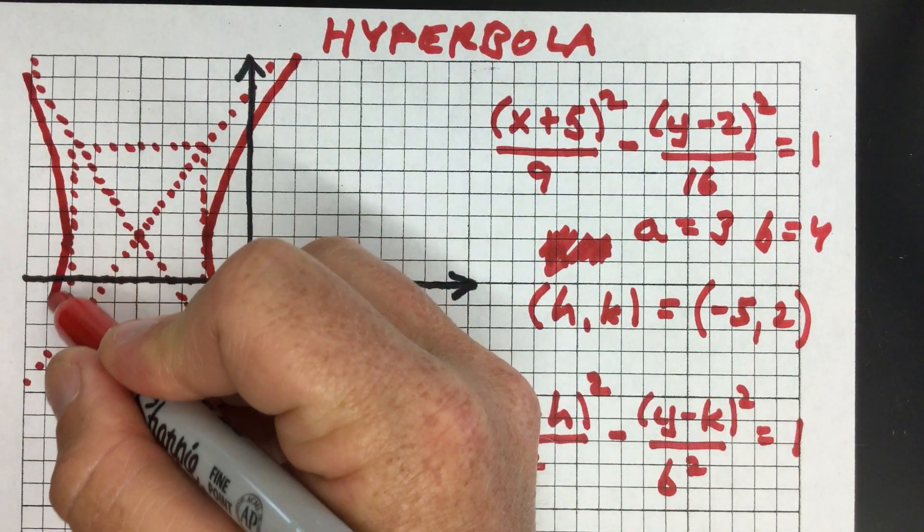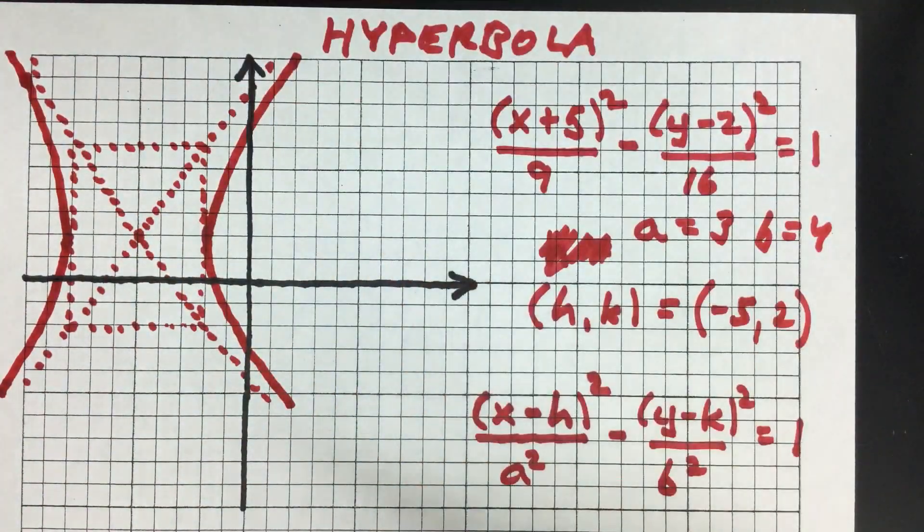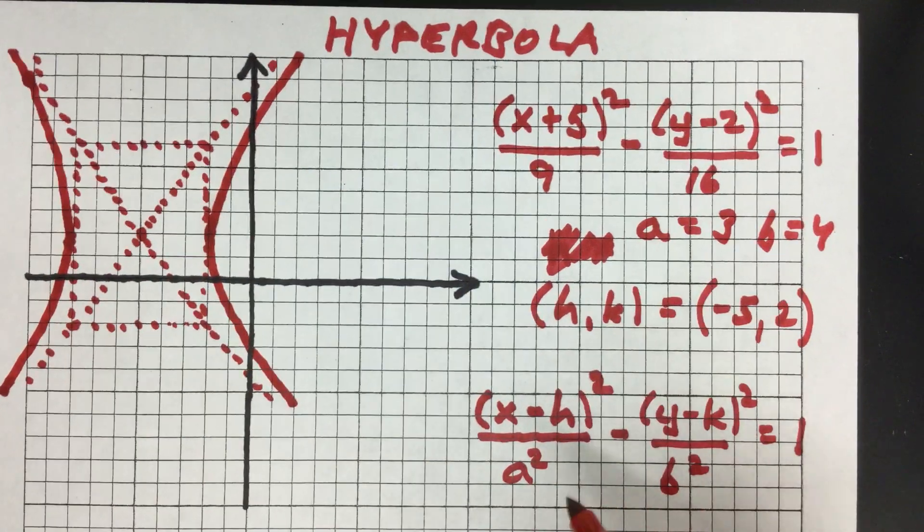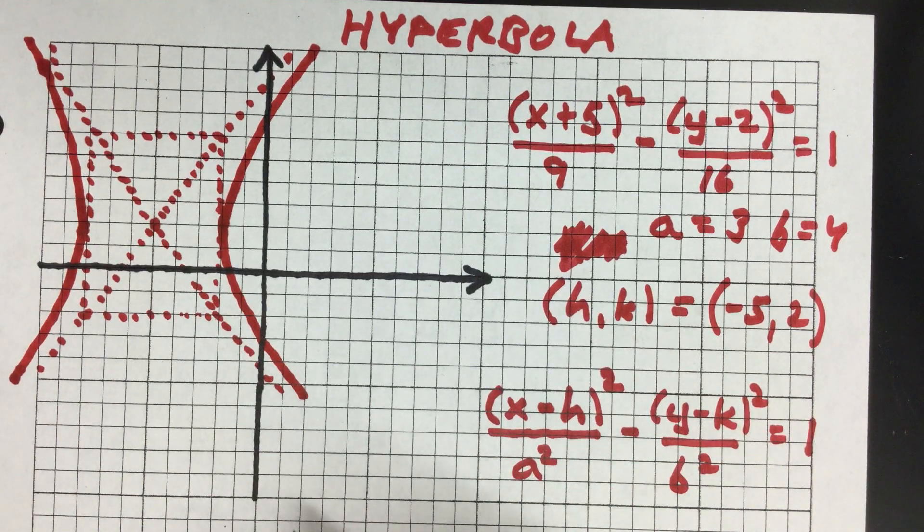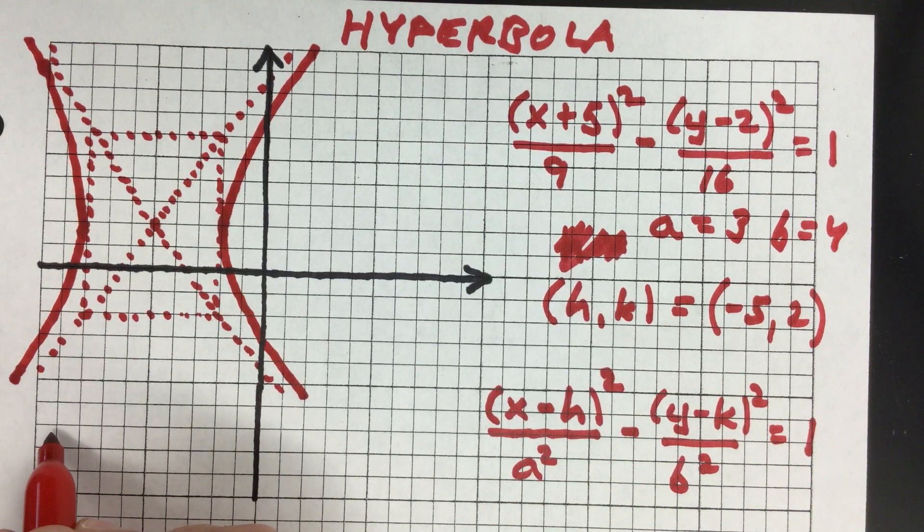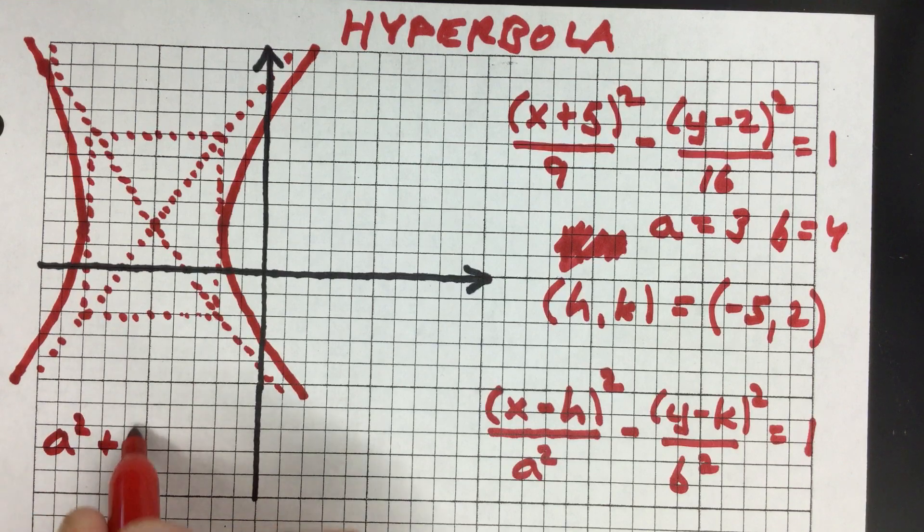One other thing we can add to the picture are the focal points. To get those you just use the relationship a squared plus b squared equals c squared.